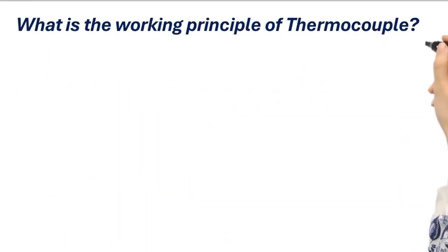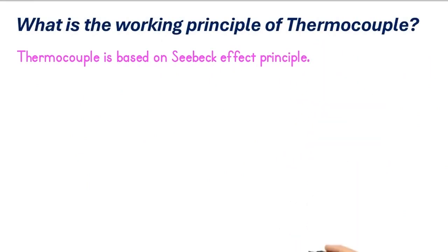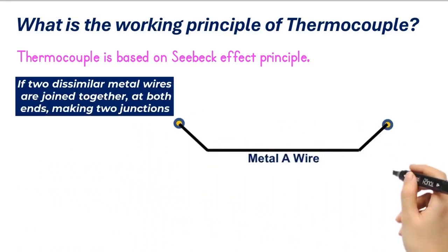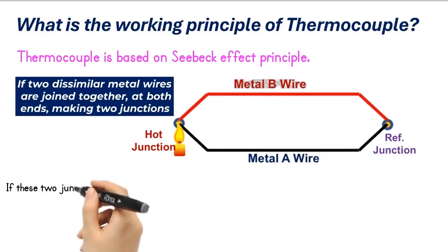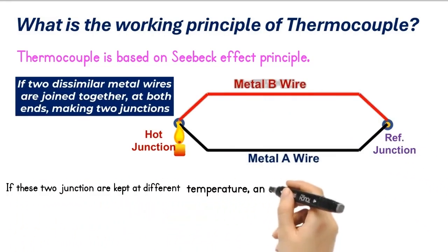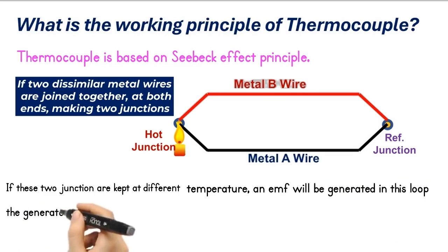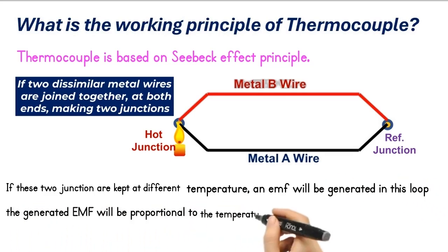What is the working principle of thermocouple? The working principle of the thermocouple is based on the Seebeck effect. This says that if two dissimilar metal wires are joined together at both ends, making two junctions, if these two junctions are kept at different temperatures, an EMF will be generated in this closed loop. The generated EMF will be proportional to the temperature difference between the two junctions. This is the working principle of the thermocouple.